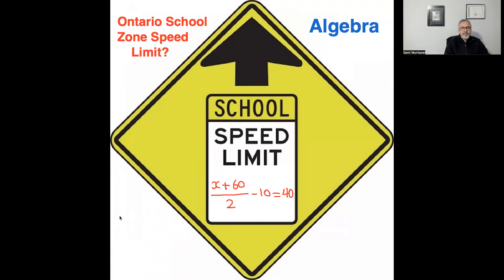So the first way, if you have x plus 60 over 2 minus 10 equals 40, the first thing is to move the negative 10 to the other side, so you end up with x plus 60 over 2 equals